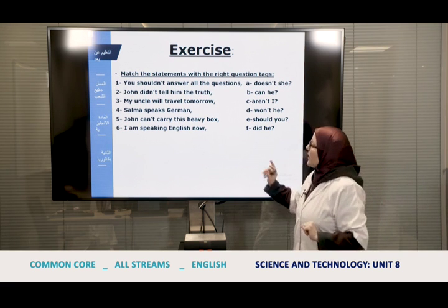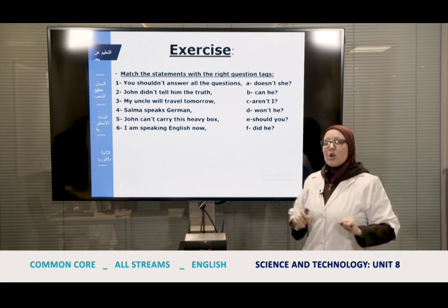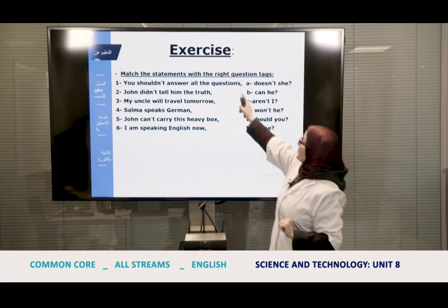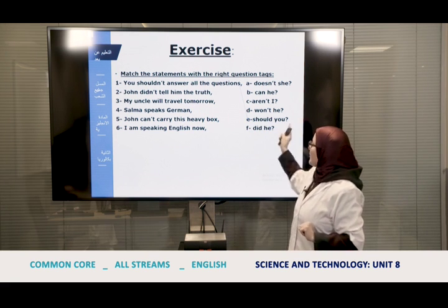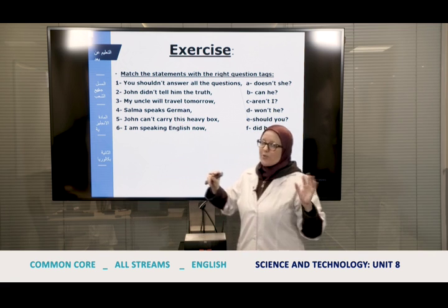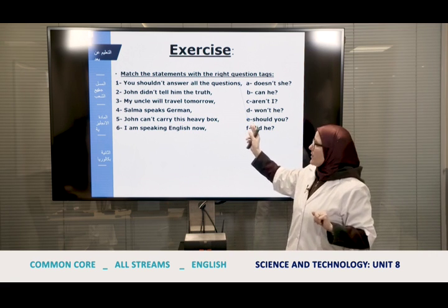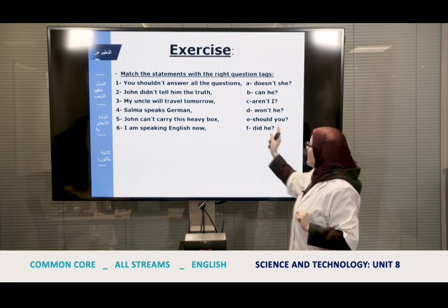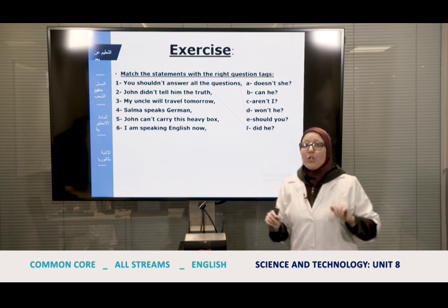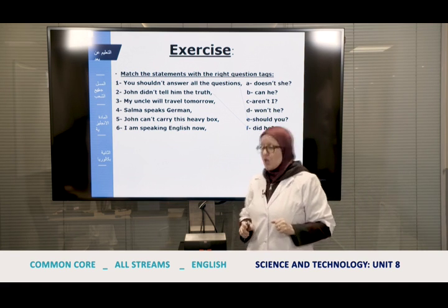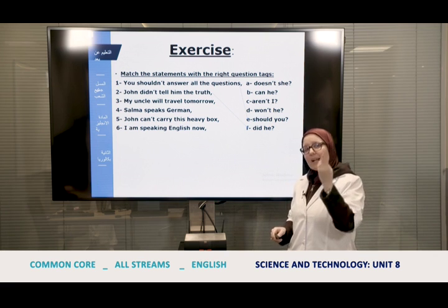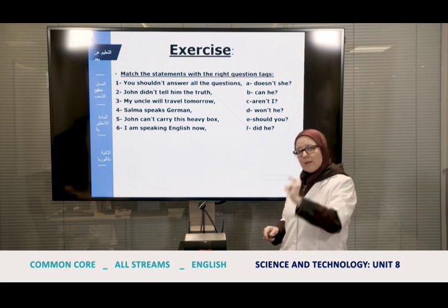For the first practice exercise, match each sentence with the right question tag. In the correction: number one — 'You shouldn't answer all the questions, should you?' Number two — 'John didn't tell him the truth, did he?' — when the sentence is negative it's easier to form the tag: 'didn't' becomes 'did' and 'John' becomes 'he.' Number three — 'My uncle will travel tomorrow, won't he?' — 'will' becomes 'won't' in the negative contraction.